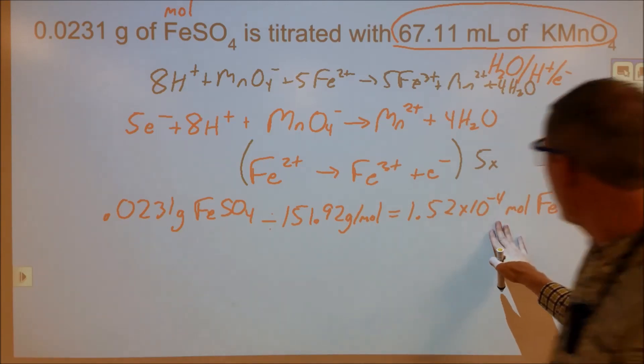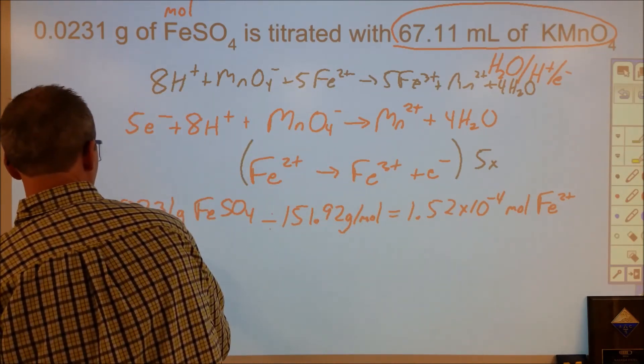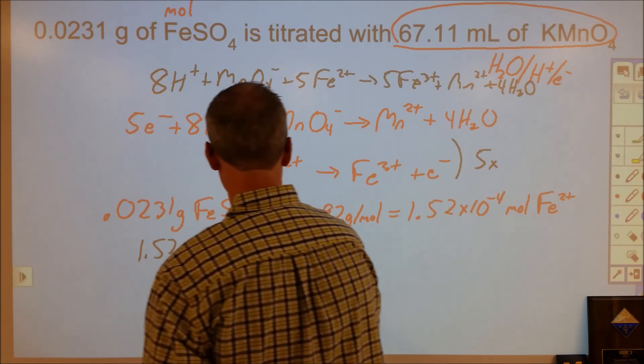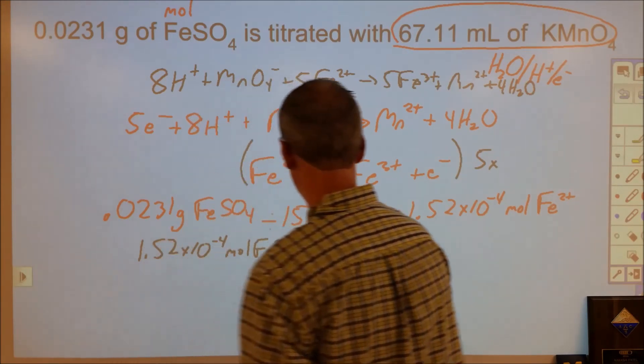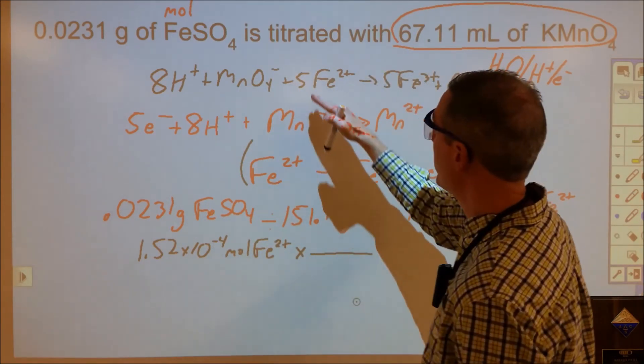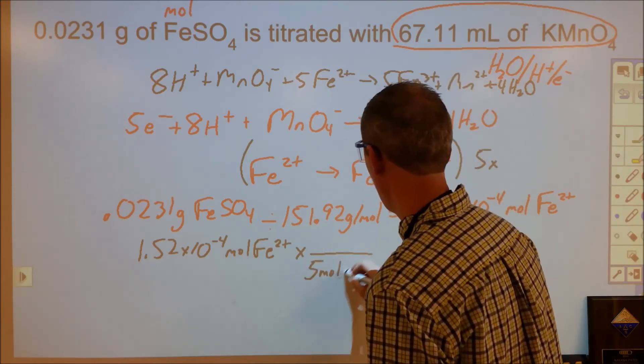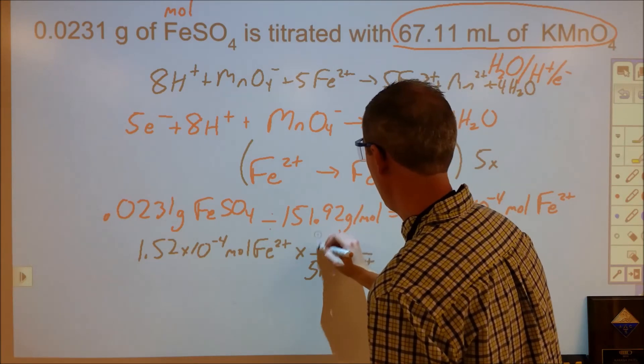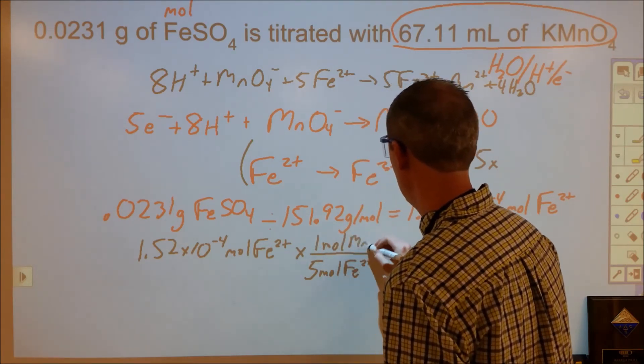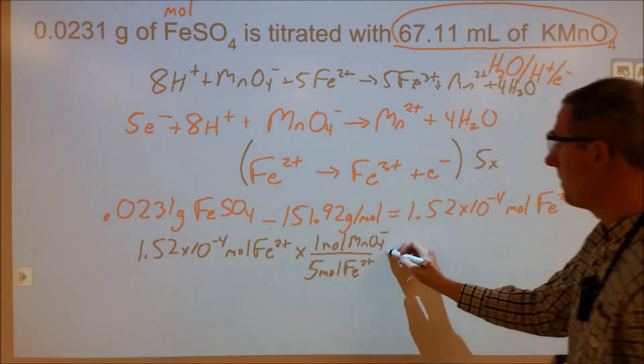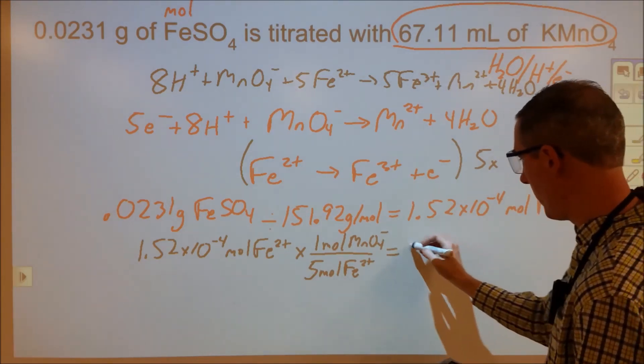Okay, now what I would do from there is I would say, okay, well for every 1.52 times 10⁻⁴ moles of that, I would say, well five of those reacts with one permanganate. So I'm going to have reacted 20 percent moles of permanganate that I did with Fe²⁺.